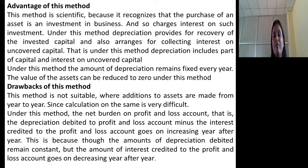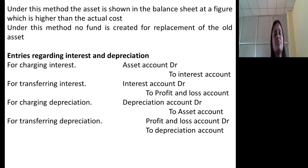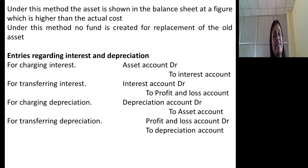Drawbacks of this method: This method is not suitable where additions to assets are made from year to year, since calculation will become very difficult. In case of an asset where you need to make additions every year, it is very difficult to calculate depreciation under this method. Under this method, the net burden on profit and loss account — that is, depreciation debited minus interest credited — goes on increasing year after year, because though the amount of depreciation remains constant, the amount of interest credited to profit and loss account goes on decreasing year after year. Also, under this method, the asset is shown in the balance sheet at a figure which is higher than actual cost. Furthermore, no fund is created for replacement of the old asset, even though interest on invested amount is considered in the depreciation calculation.